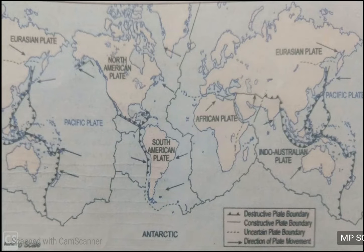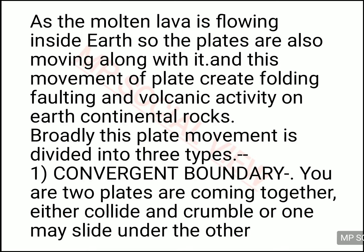The plate tectonic theory says the earth is divided into seven major plates and some minor plates, and these plates are moving because there is molten lava inside our earth. The lava is flowing, so the plates also move along with it. When the plates are moving, the crust of the earth faces changes — the crust faces folding, faulting, volcanic activity, earthquake, and many other changes because of this movement.